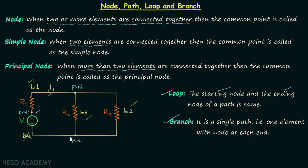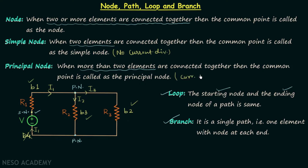Before ending, there is a small but important point: current I1 enters the simple node and I1 leaves the simple node, so there is no current division at the simple node. However, at the principal node, I1 enters and divides into two currents I2 and I3, so current division takes place at the principal node. This is all for node, path, loop, and branch of a network.